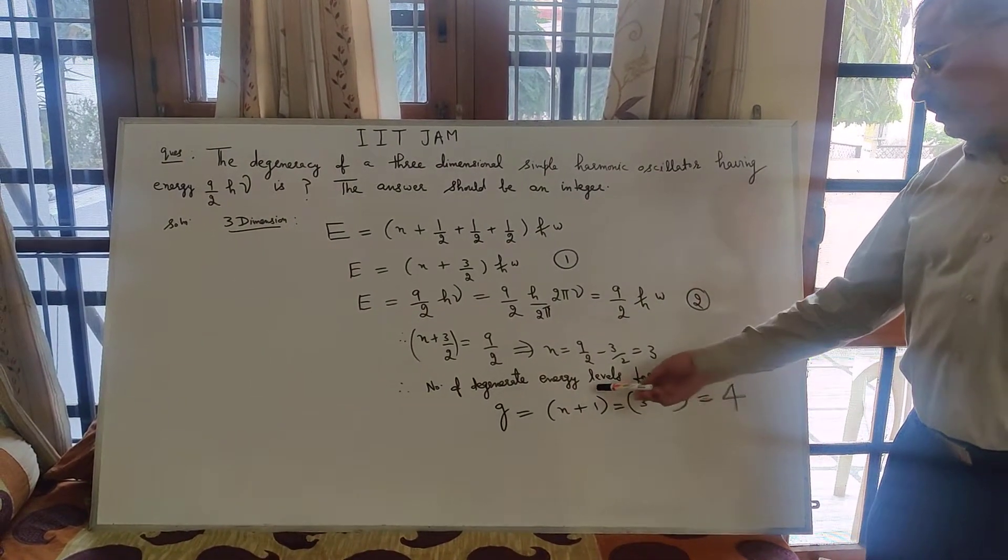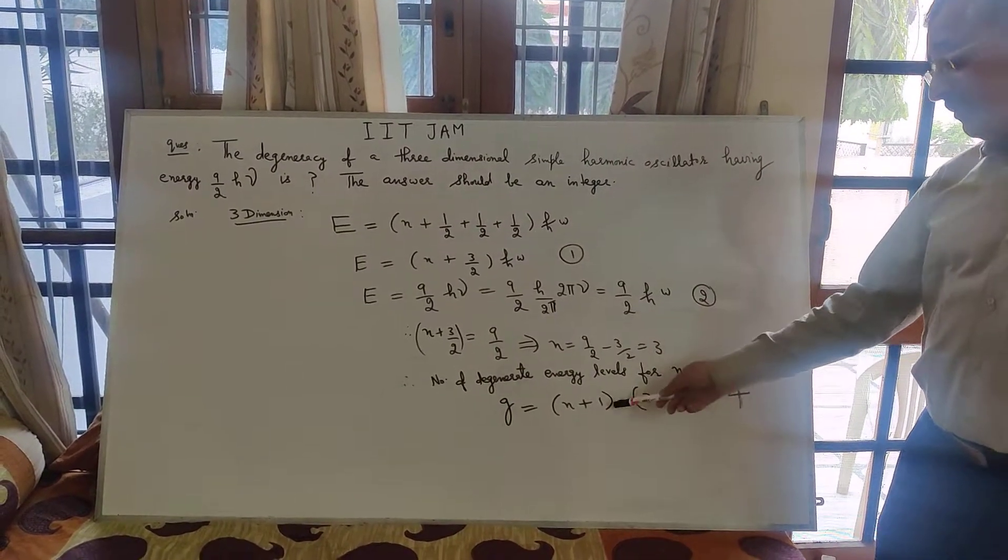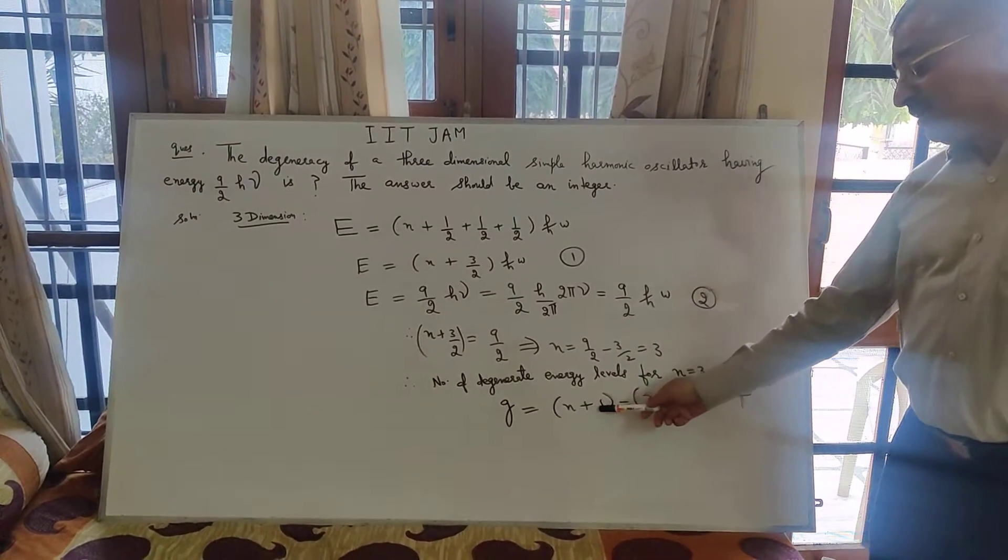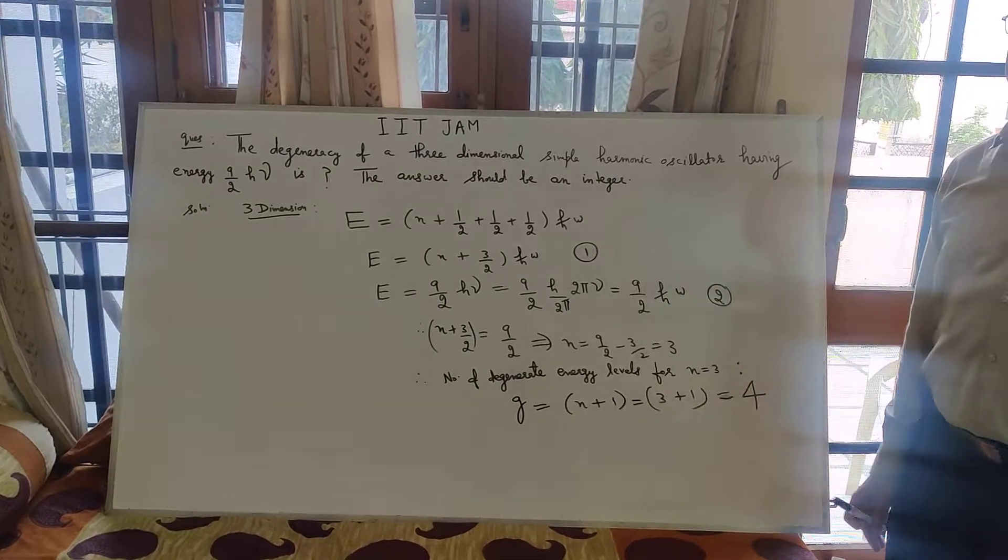But be cautious. Number of degenerate energy levels for n equal to three is not three. In degeneration we add 1. You should remember this formula. Degeneration is n plus one. So, three plus one equals four. That's the answer. Okay, thank you.